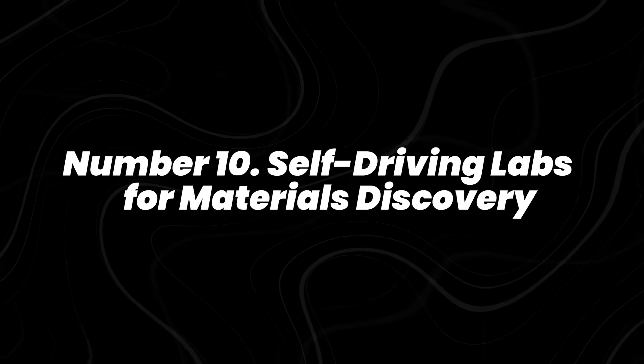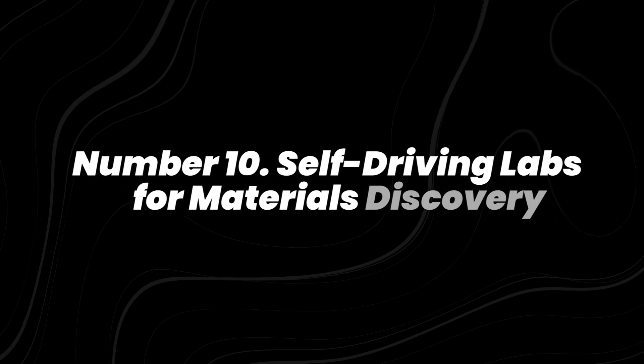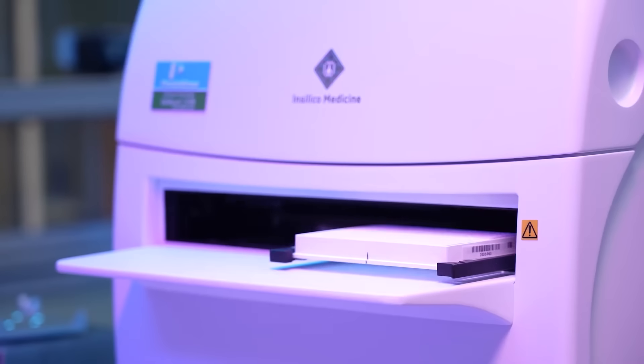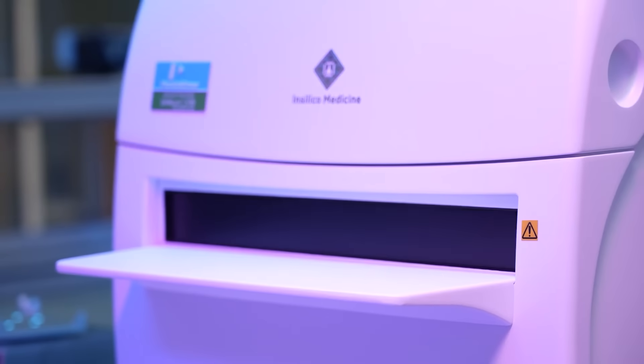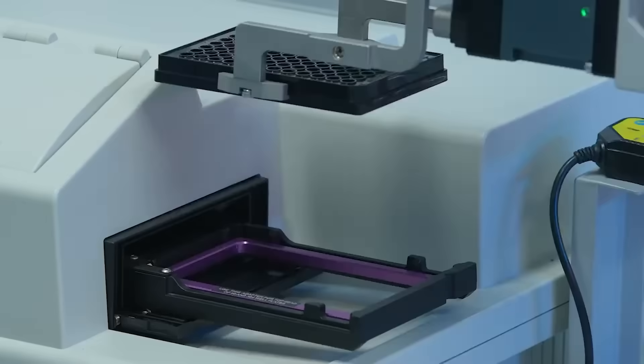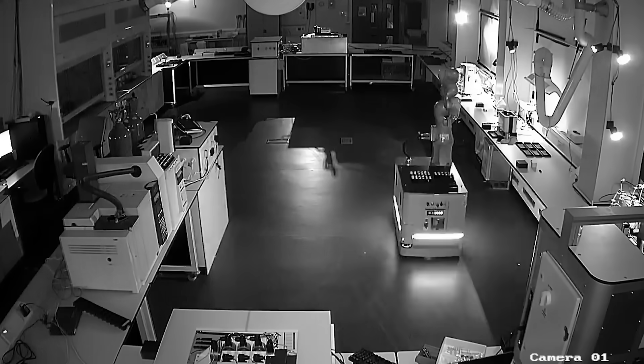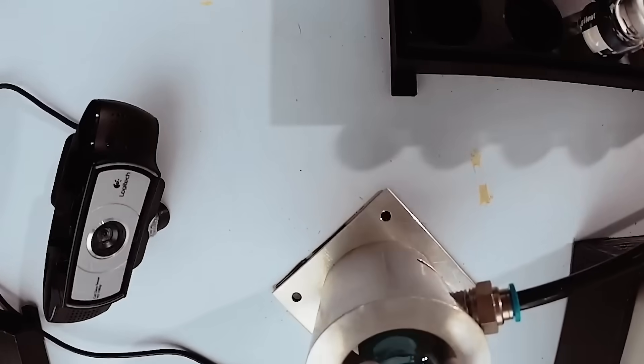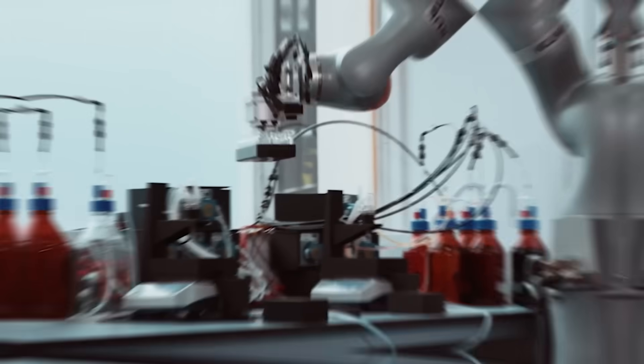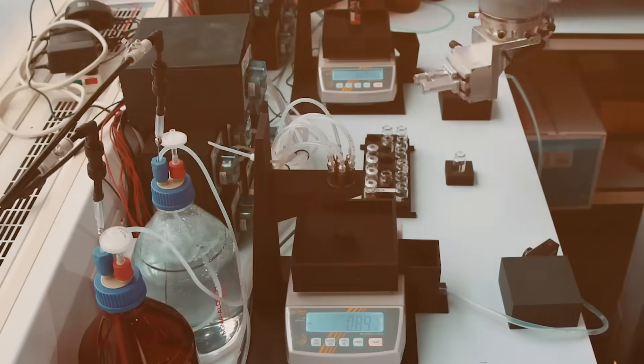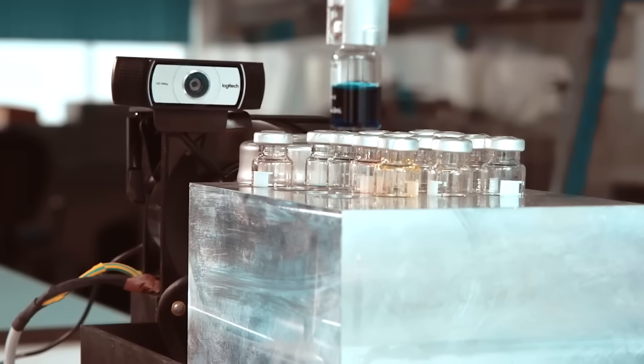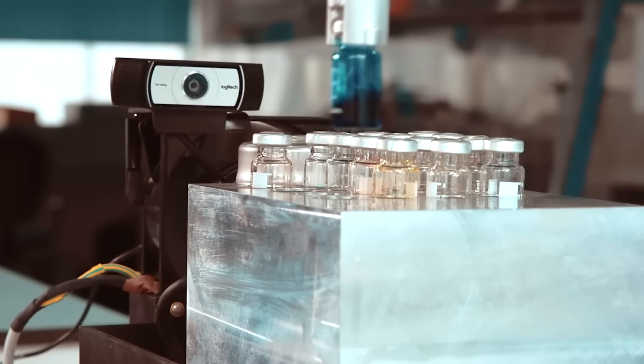Number 10, Self-Driving Labs for Materials Discovery. Researchers at the University of Liverpool demonstrated a fully autonomous robot scientist capable of designing and running chemical experiments 24 hours a day. Powered by AI, this system could hypothesize, test, and refine results without human supervision. It performed more than 700 experiments in just eight days, a task that would have taken human researchers months.